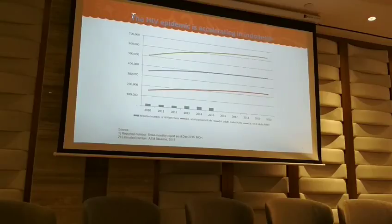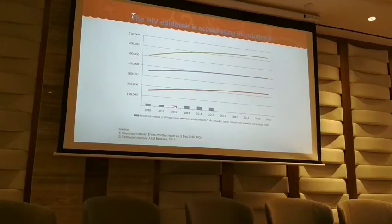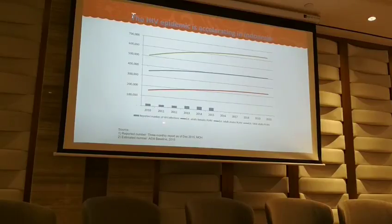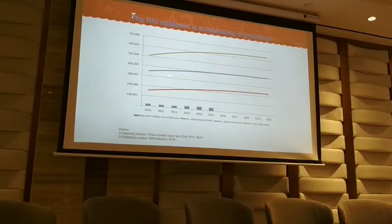This data from Indonesia shows that the HIV epidemic is still accelerating. The reported number of new HIV infections is still very low — below 100% of expected — but the estimated number is higher, now at about 620,000.